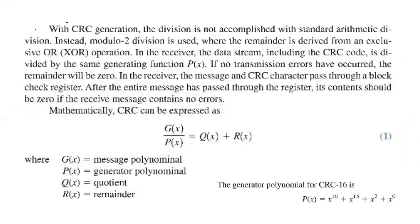With CRC generation, the division is not accomplished with standard arithmetic division. Instead, modular 2 division is used, where the remainder is derived from the exclusive OR operation. At the receiver, the data stream including the CRC code is divided by the same generating function P of X. If no transmission error occurred, the remainder will be 0.